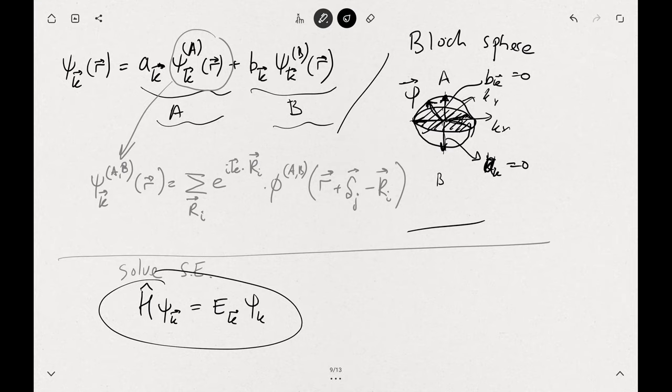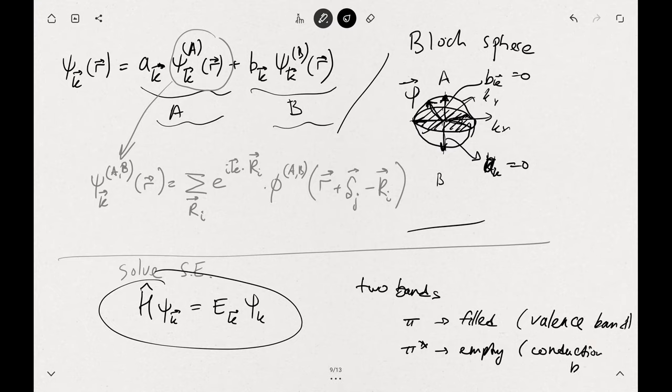We will get a solution in terms of two bands, those which I drew before. Those you can get rigorously, and those will be these π-bands which we already discussed. One is π and the other is π*. This one is filled with electrons, it's called also valence band. The other one is empty, it's called also conduction band.